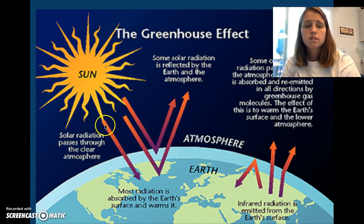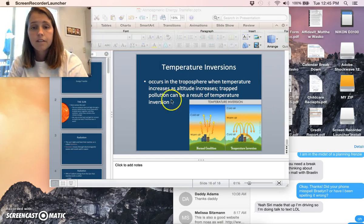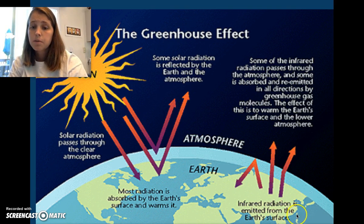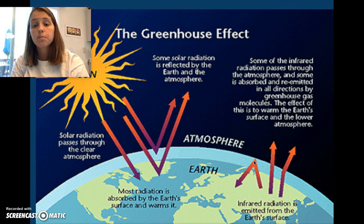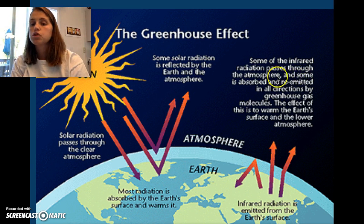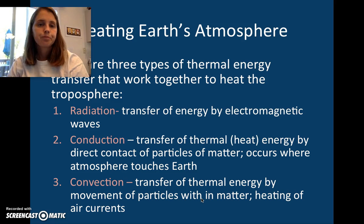We have the Sun. The solar radiation passes through the clear atmosphere. Most of the radiation is absorbed by the Earth's surface and it warms it. Some radiation is reflected by the Earth and the atmosphere and heads out into space. We have some infrared radiation that is emitted from the Earth's surface. That's basically once the radiation is absorbed, eventually it will be released and it can sometimes be trapped by the atmosphere, the greenhouse, like a blanket. And then some of it will be able to leave through the atmosphere and is re-emitted in all directions by greenhouse gas molecules. This re-radiation of the heat allows all the different parts of the Earth's surface to stay warm even at night.